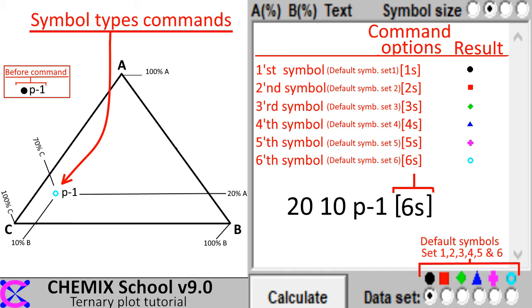The way to change the symbol type is to enter a symbol command. There are a total of six different symbols to choose from.